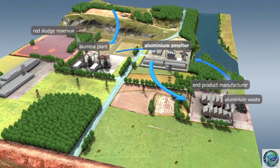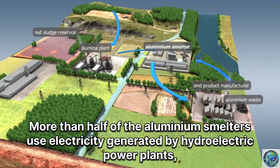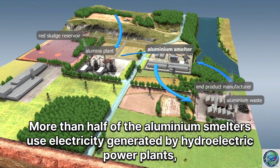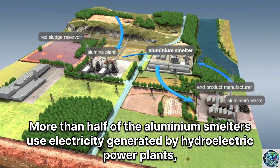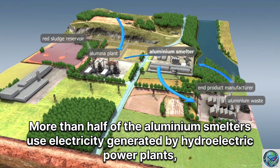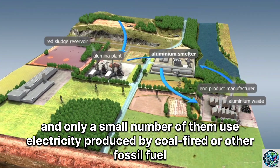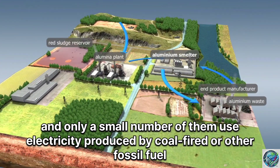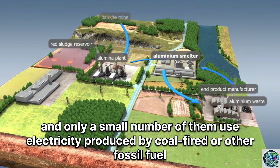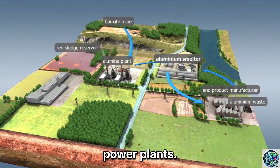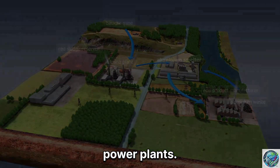More than half of the aluminium smelters use electricity generated by hydroelectric power plants, and only a small number of them use electricity produced by coal-fired or other fossil fuel power plants.